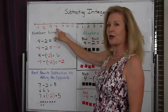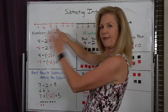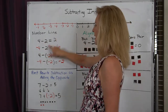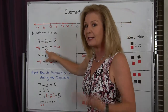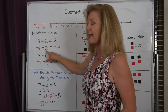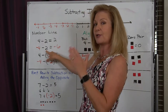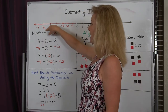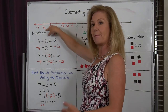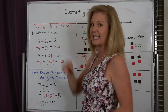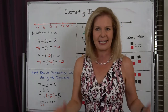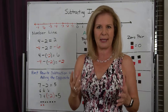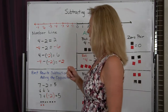Now if I start at negative 4, I've got to start down here. I still face towards the smaller numbers. I'm subtracting a positive number, therefore I have to walk forward — 1, 2. So negative 4 minus 2 is negative 6. Lots of kids don't see that in their minds when they're thinking about that subtraction.